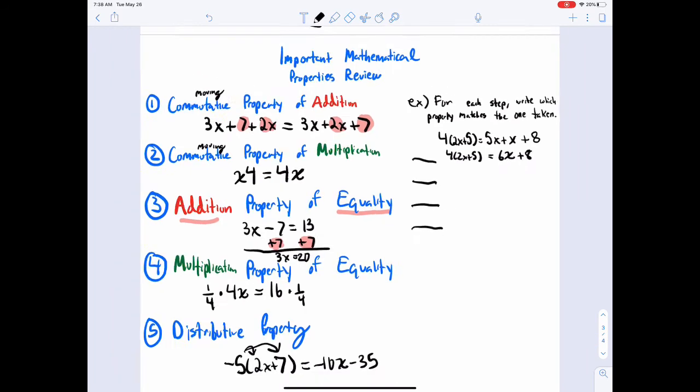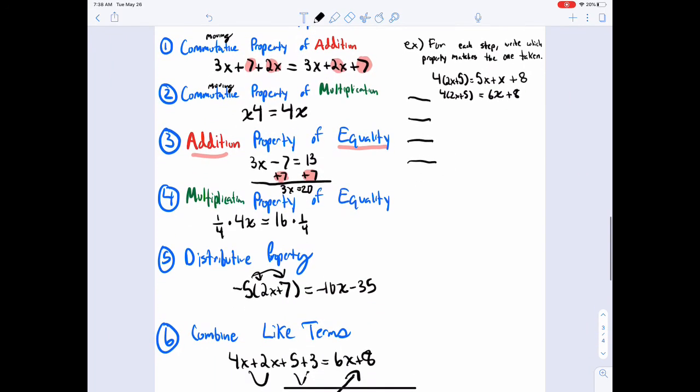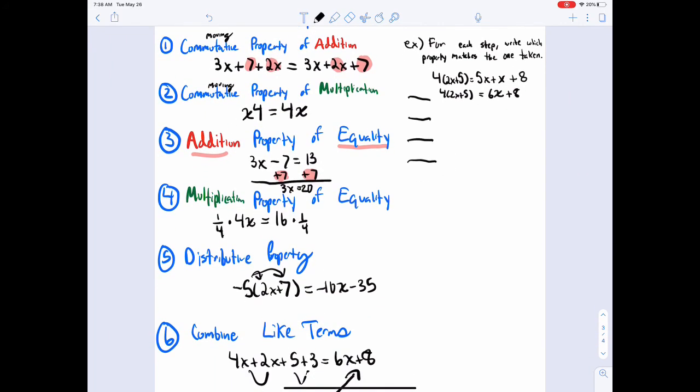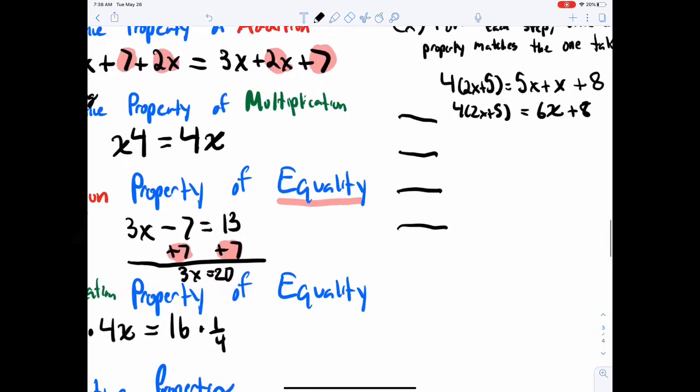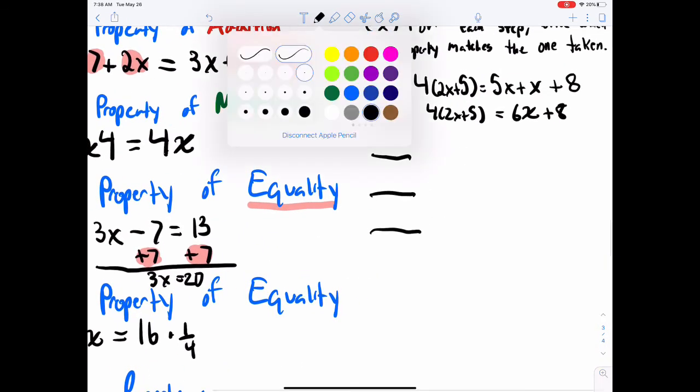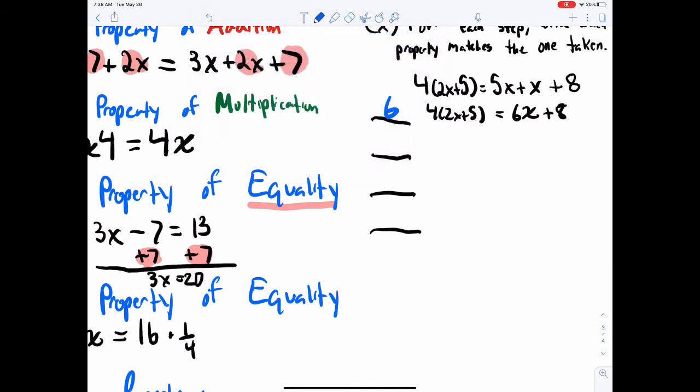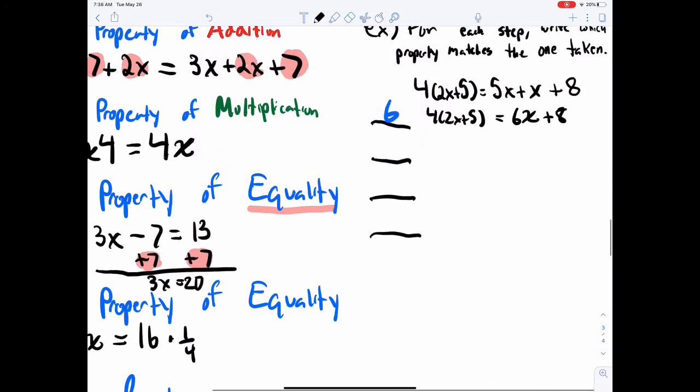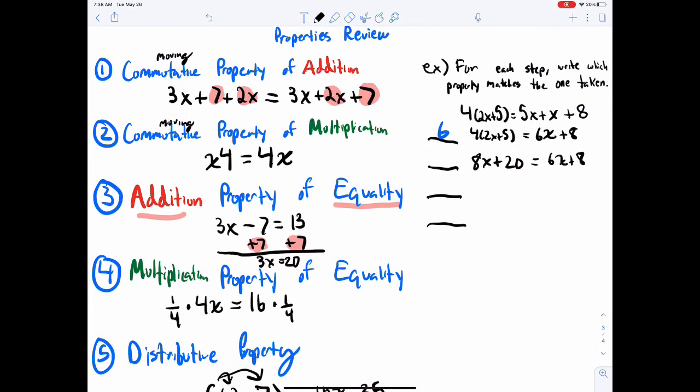So the first thing I'm going to do is this. All right, what property would justify that? You know, there's more than one thing you can do here, but what property did I just do there? Well, I made the 5x and 1x into 6x. That'd be combining like terms, that would be step 6. Okay. The next thing I'm going to do is this: 8x, 8x plus 20 equals 6x plus 8. What did I do there? I distributed the 4, that's step 5 here.